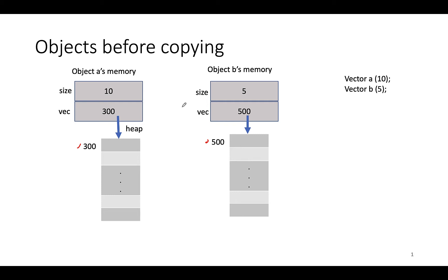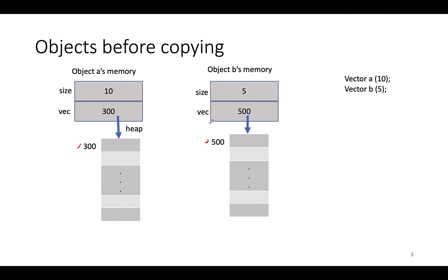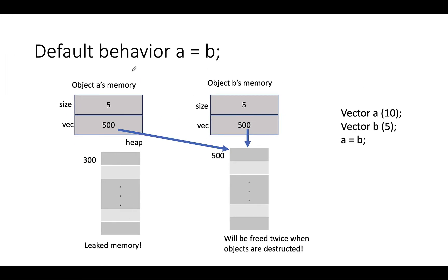Once I do A equals B, the default behavior is what we call shallow copying. With shallow copying, what happens is that the values are copied from one object to the other — a member-wise copy. So the value here is copied here, and the value here is copied here. The effect is that address 500 is now assigned to this pointer, and therefore both pointers now share the same space.